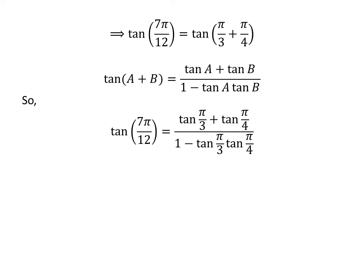Application of the above trigonometry identity gives us tangent of 7 times pi upon 12 is equal to tangent of pi upon 3 plus tangent of pi upon 4, upon 1 minus tangent of pi upon 3 times tangent of pi upon 4.